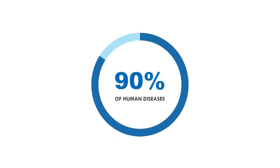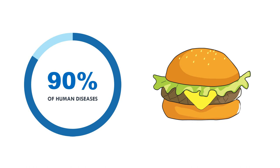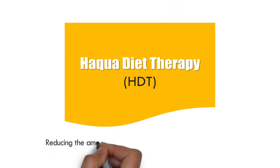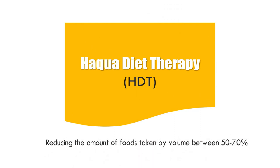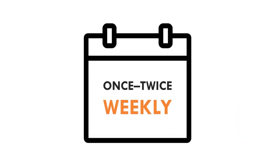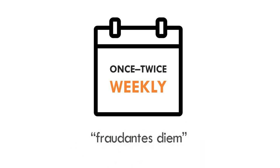A depletion of the body's essential fuels would lead to the foods taken turning into sludge and causing various body malfunction. We have hypothesized that more than 90 percent of human diseases are the result of foods. For this reason, we have come up with the implementation of Haqua Diet Therapy by reducing the amount of foods taken by volume between 50 to 70 percent, and sometimes up to 90 percent, except in some rare cases such as once or twice weekly, which we coined as Fraudantes Diem from the Latin word meaning Cheating Day.